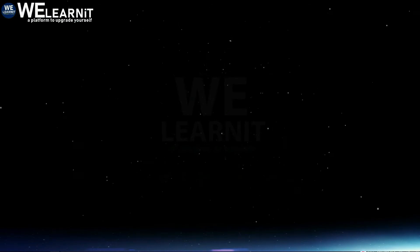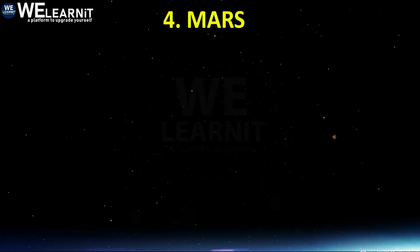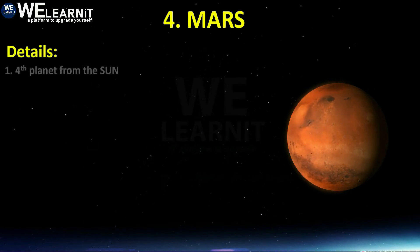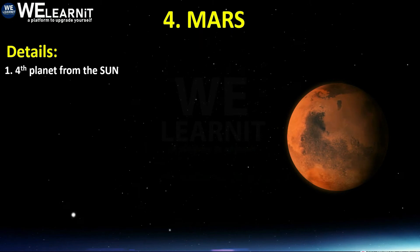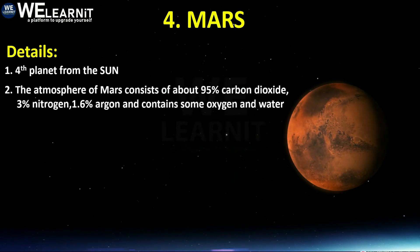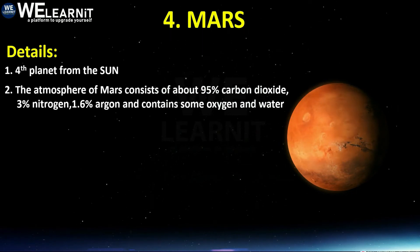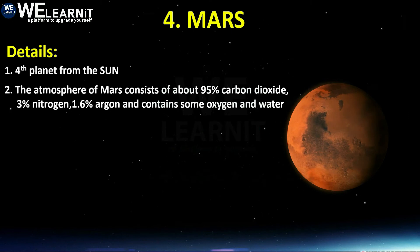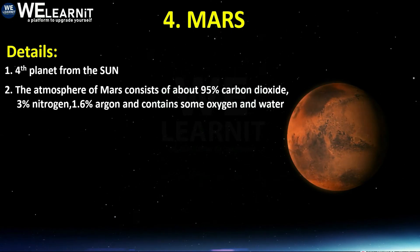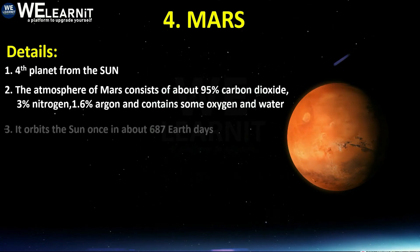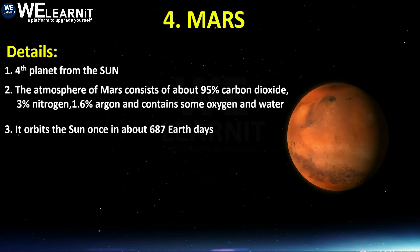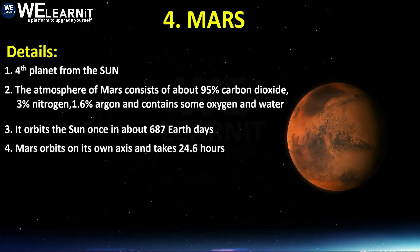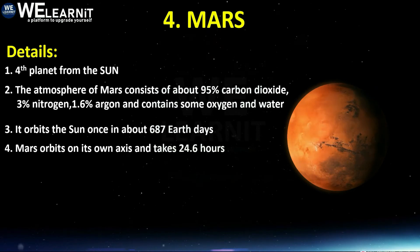The fourth planet is Mars. Mars is the fourth planet from the Sun. Its atmosphere consists of about 95% carbon dioxide, 3% nitrogen, and 1.6% argon, and contains some oxygen and water as well. It orbits the Sun once in about 687 Earth days, and Mars orbits on its own axis and takes 24.6 hours.